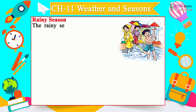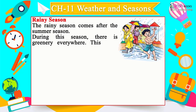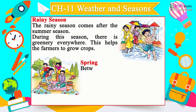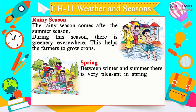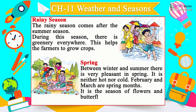Rainy Season comes after summer — there is greenery everywhere, which helps farmers grow crops. Spring is between winter and summer — it is very pleasant, neither hot nor cold. February and March are spring months — it is the season of flowers and butterflies.